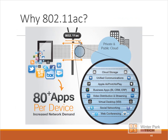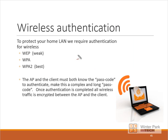With 802.11AC, we can have tremendous speed and capacity using one access point. For example, Aruba's new production device supporting 802.11AC can support over 80 apps per device through a single access point, allowing more capacity and speed per WAP. To provide security for a home network, wireless access points use an authentication process. We typically know these as WEP, which is very weak and not encouraged, WPA, and WPA2 — which is the best one and should always be used when possible.